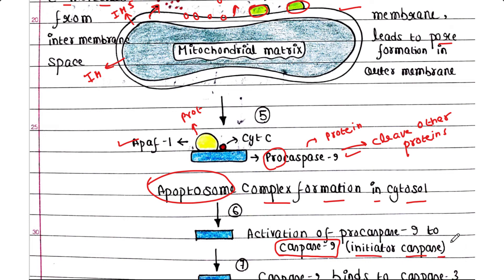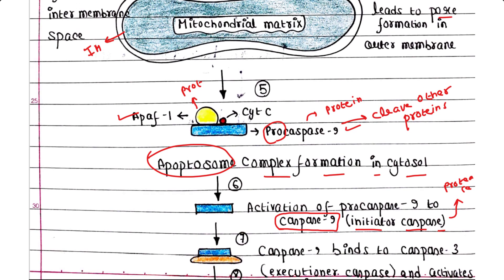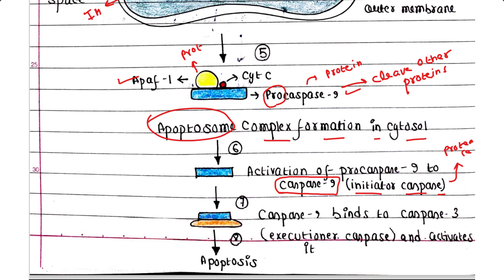Caspase-9 is an initiator caspase because it initiates the breakdown of other proteins. Once caspase-9 is activated, it binds to caspase-3, which is the executioner caspase.